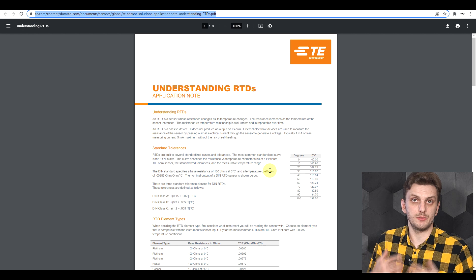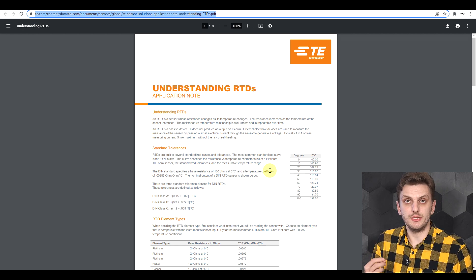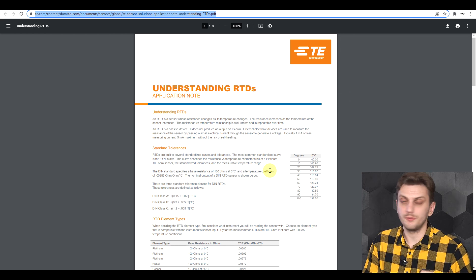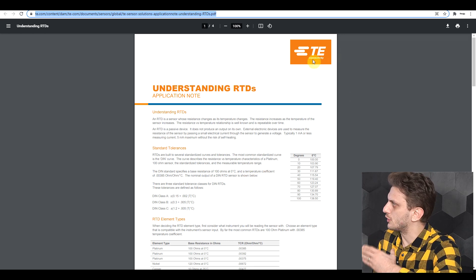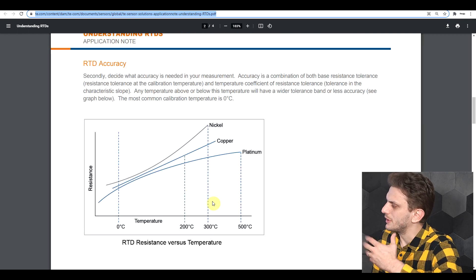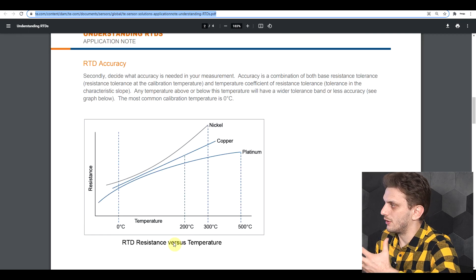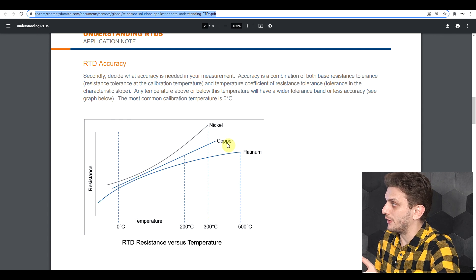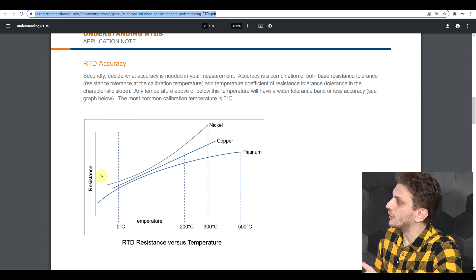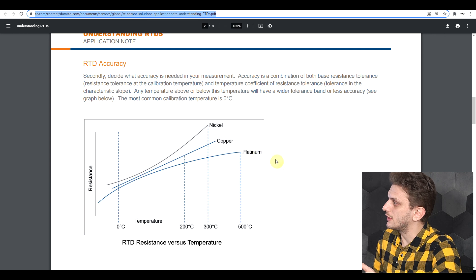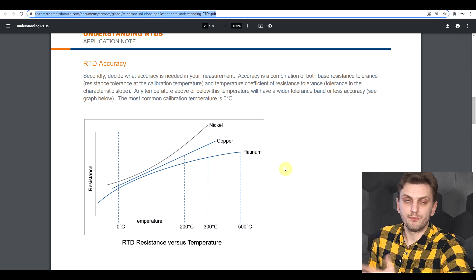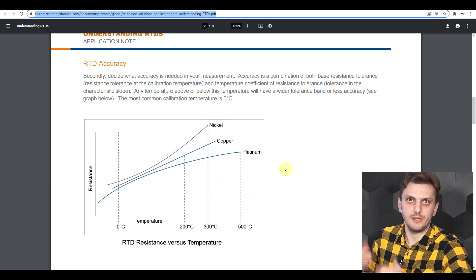Regardless of the complexity of the measurement circuit, the RTD is a far more linear device compared to an NTC. If we have a look in this application note from TE Connectivity, we can see that based on the material from which the RTD is made, you can have either a fairly straight variation like with copper, or you can have a slight curvature with nickel or platinum. So you don't have a perfectly linear variation, but regardless it's far more linear than the NTC.